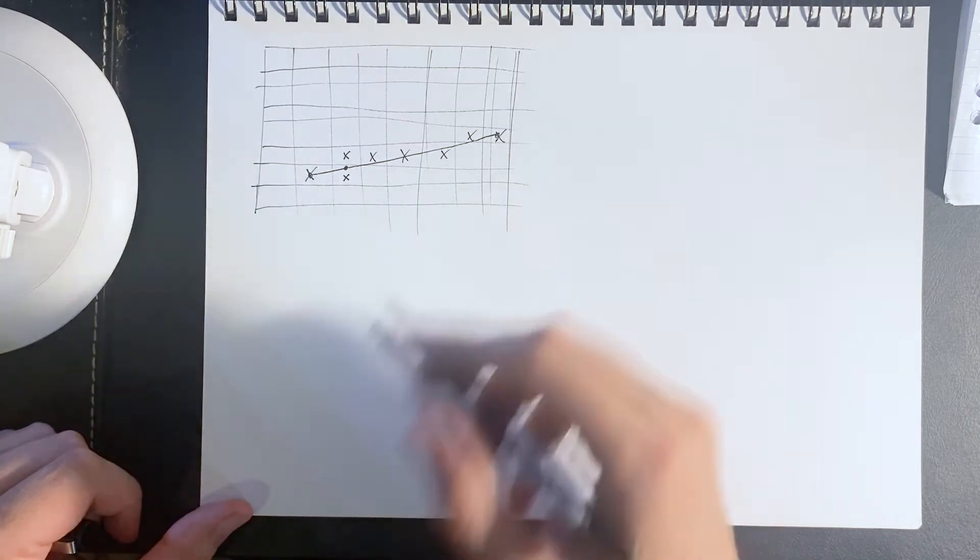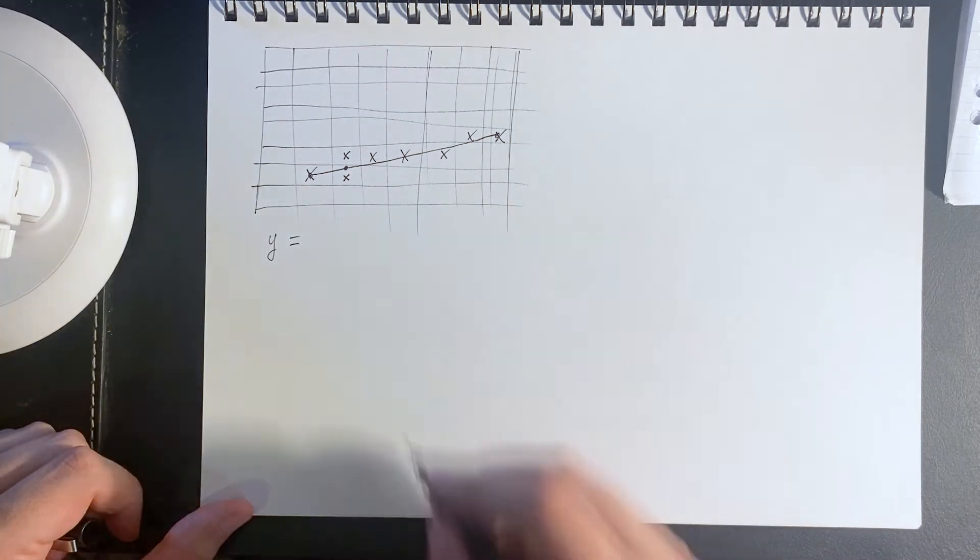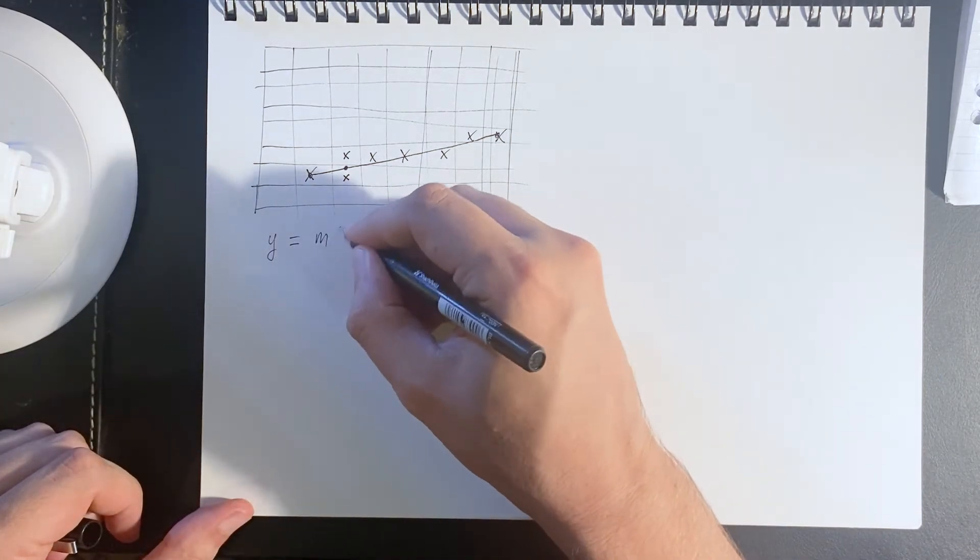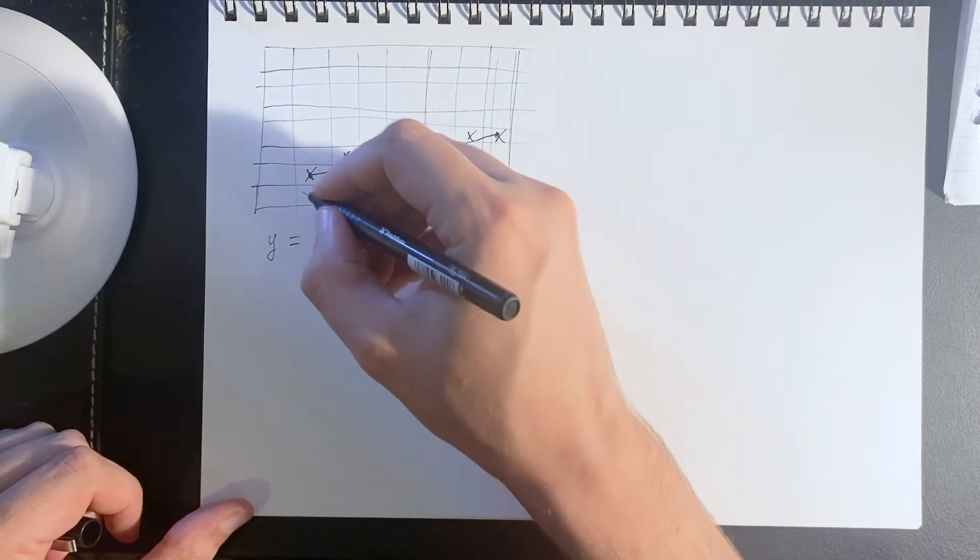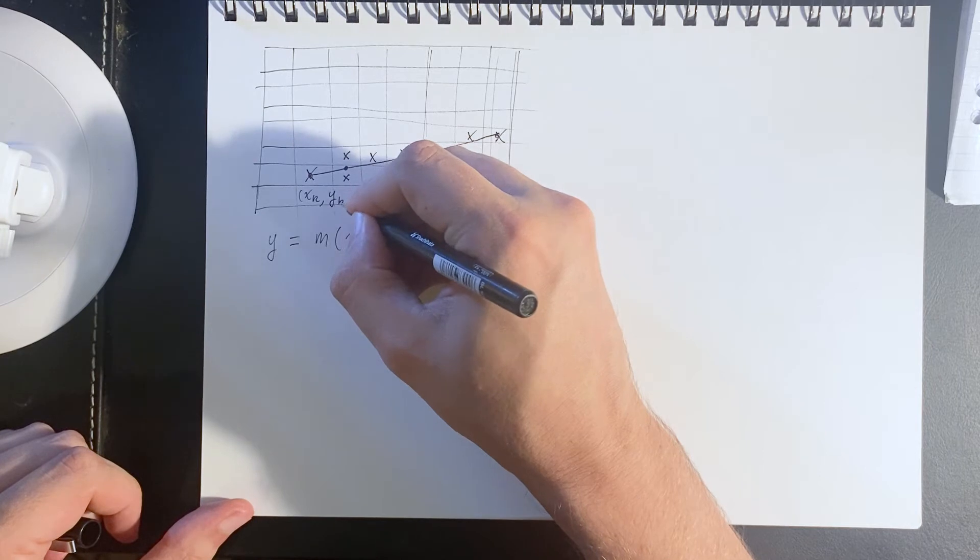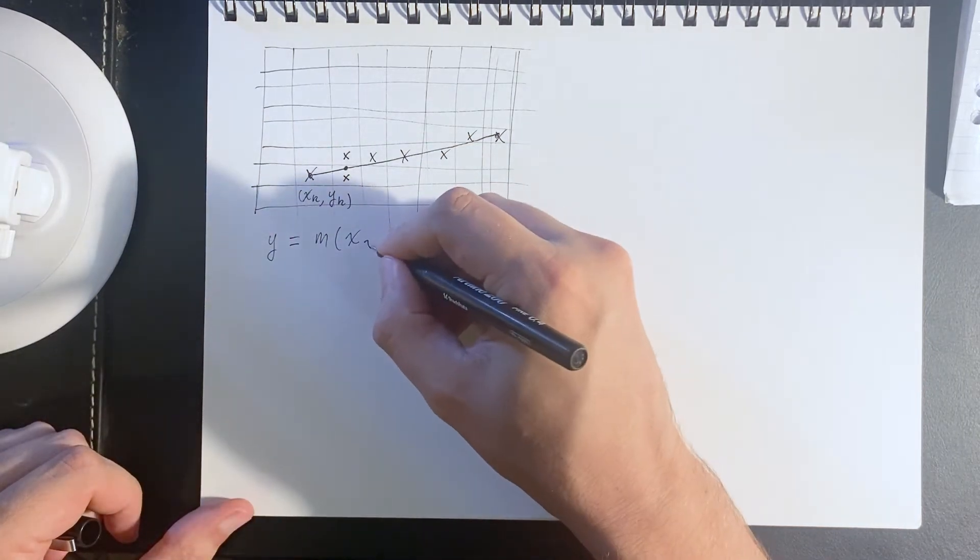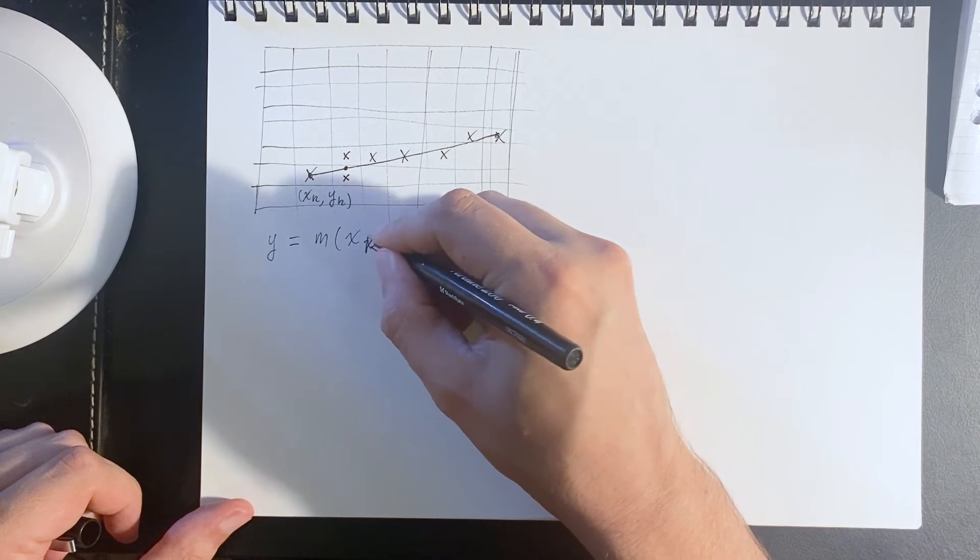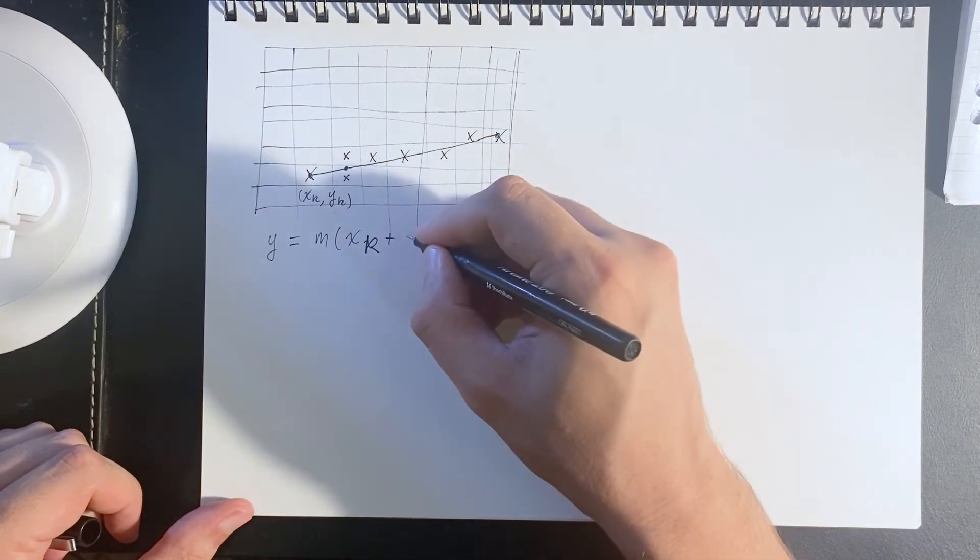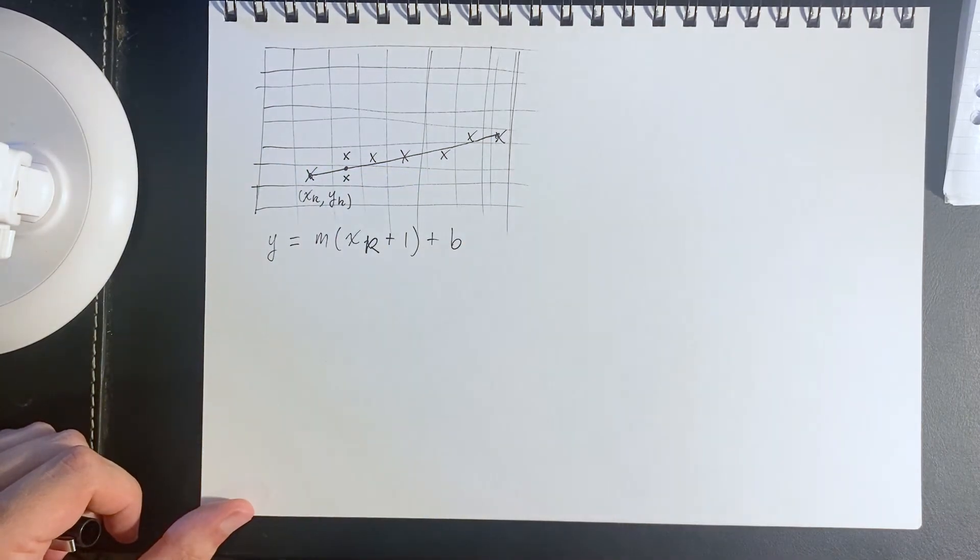We have a true theoretical y value which we can model by a slope times—if we have x_k, y_k being a previous step, we go to x_k plus one, we'll also have some intercept that we don't know.